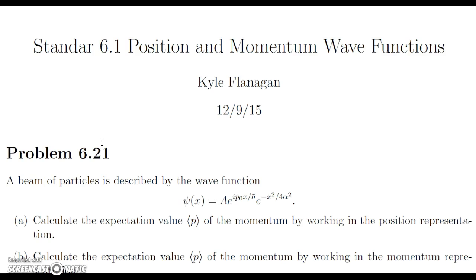The question says a beam of particles is described by the wave function psi of x equal to A·e to the i·p₀x/ℏ times e to the negative x squared over 4 alpha squared. One thing we should note before we go on is that this wave function kind of looks like a Gaussian.